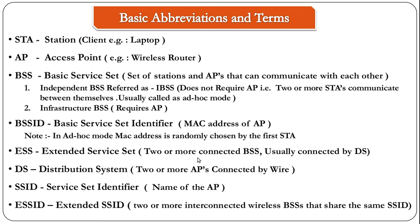When two or more BSS are connected, it is called an ESS. These BSS are usually connected by a DS — distribution system — which is basically the wired LAN side. When two or more BSS are connected using LAN, they are called the ESS. The next abbreviation is SSID — service set identifier — basically the network name, the name of the AP.